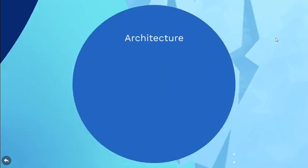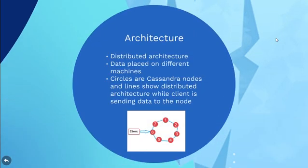We now see the architecture of Cassandra. Cassandra handles huge amounts of data with its distributed architecture. Data is placed on different machines with more than one replication factor that provides high availability and no single point of failure. In the image below, circles are Cassandra nodes and lines between the circles show distributed architecture while the client is sending data to the node.